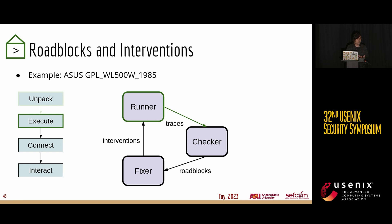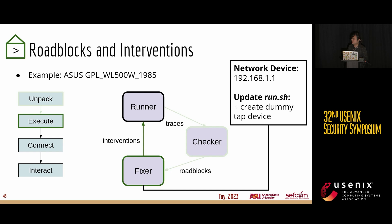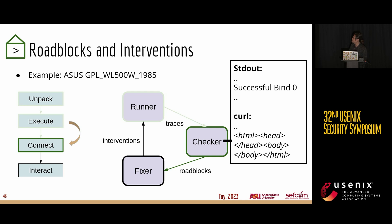To illustrate this, we can look at the ASUS firmware example, the WL500. Here we are able to unpack and execute the firmware image already, and from the gathered traces — a mix of things like strace, etc. — the checker finds that it can run but can't bind to a specific address and needs a unique network device. The checker passes these roadblocks to the fixer, which proposes creating a dummy network device with that hard-coded address. These interventions are applied through a run script and passed back to the runner, and after executing again, we're able to bind and even connect to the firmware web services.